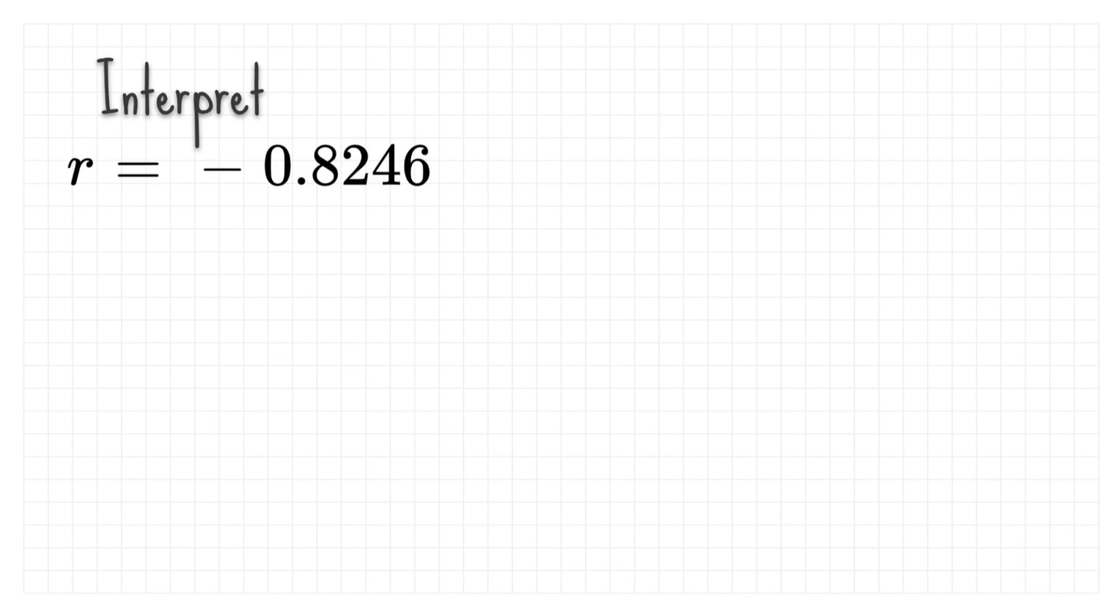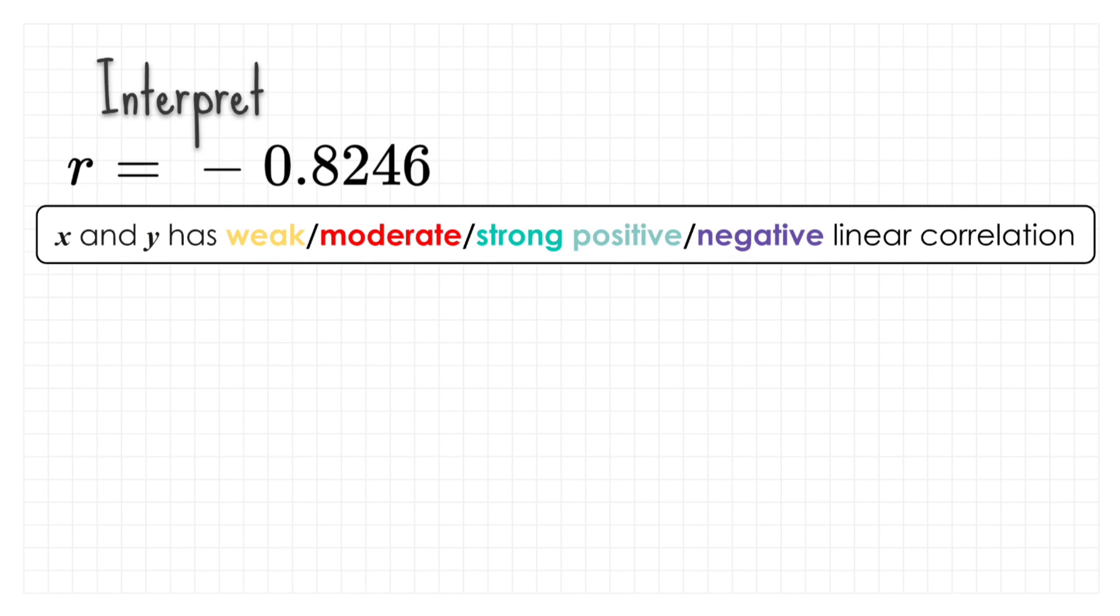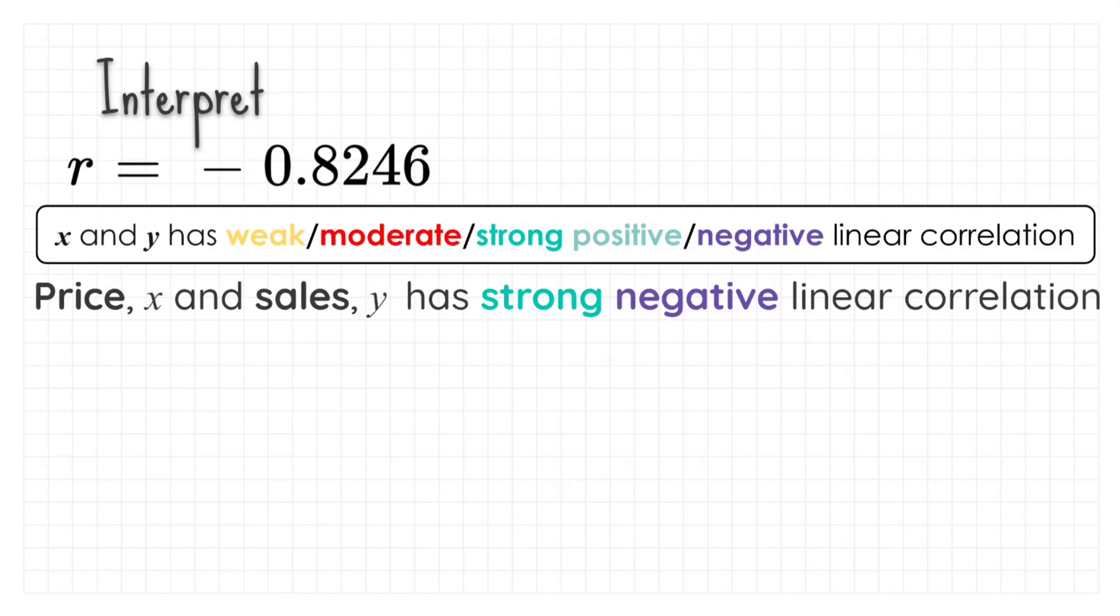Now, let's interpret r. Based on this statement, we know that x and y are price and sales. Therefore, price and sales has strong negative linear correlation.